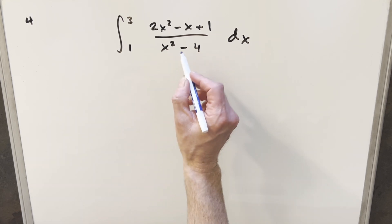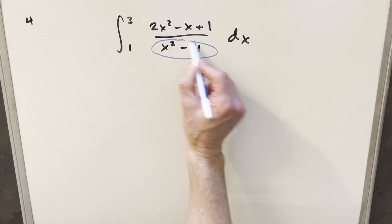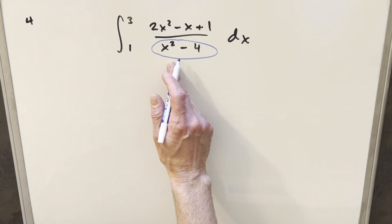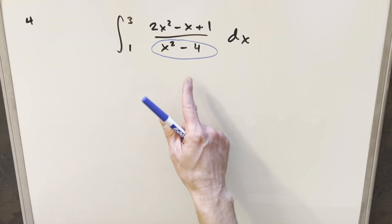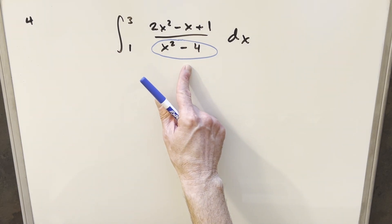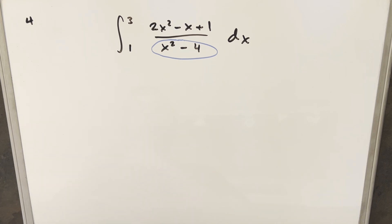Now before we really get into it, the first thing we need to notice is just look at this denominator. When x is equal to two, we're dividing by zero. If we end up in a situation where x equals two, then we have zero in the denominator, we're dividing by zero, and that's a huge problem. And the thing with that is our bounds are from one to three, so we've got two right in the middle there.